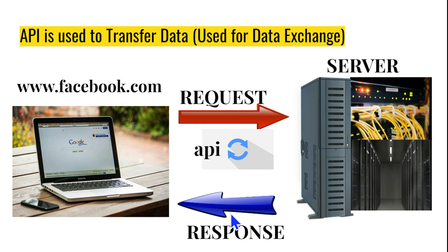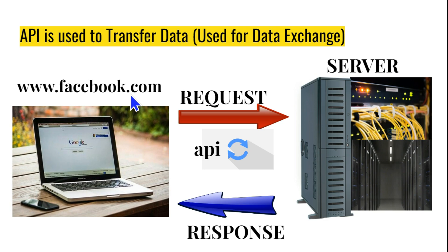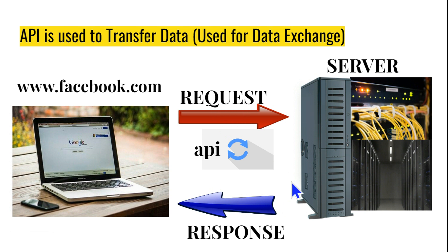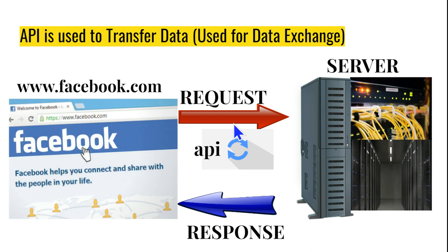API is the overall function of sending a request and receiving a response. This entire thing is where the API works in the back end — you do not see it in the front end. A request is sent to the server and a response is received back. There are two processes: requesting and receiving a response from the server.